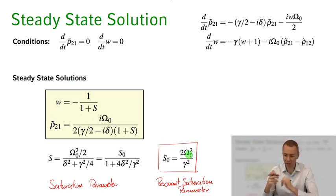So this really is just nothing than the intensity of the light field divided by some characteristic intensity of our atomic system.